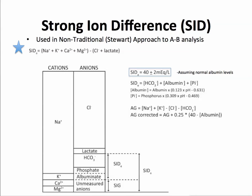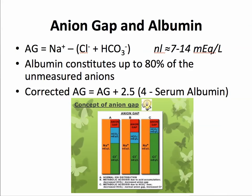Strong ion difference is a concept we'll discuss further in the interactive classroom portion. Anion gap and albumin is another important concept. Anion gap is usually calculated as sodium minus chloride plus bicarbonate, and normal is about 7 to 14 mEq/L. Interestingly, albumin constitutes up to about 80% of the unmeasured anions. So if you have big changes in albumin, it can alter your anion gap. We can correct the anion gap for serum albumin using the formula: anion gap plus 2.5 times (4 minus serum albumin). For example, if serum albumin is only 2, that's 4 minus 2 times 2.5, which equals 5 — you can see how the corrected anion gap would be higher.